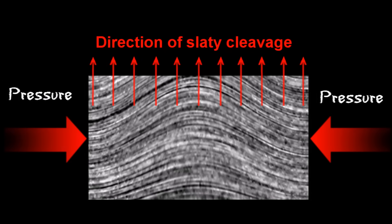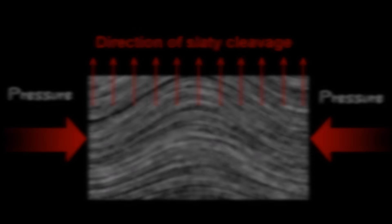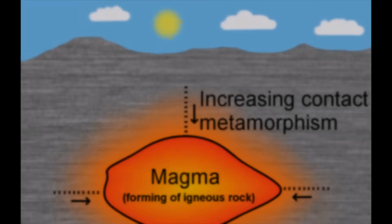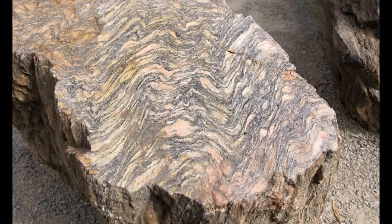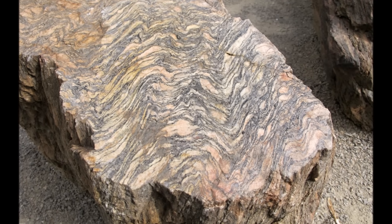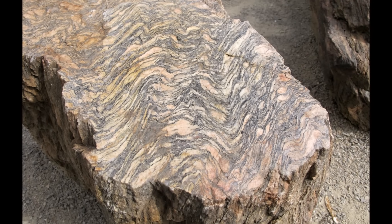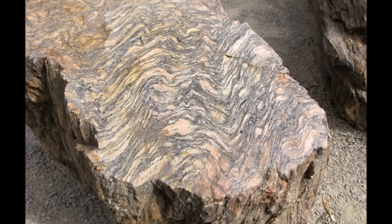Metamorphic rocks can be formed by being deep under the earth where pressure and temperatures are high, or when rock near the surface is heated up by the movement of tectonic plates or magma. Different types of rocks become different types of metamorphic rock when exposed to heat and pressure.